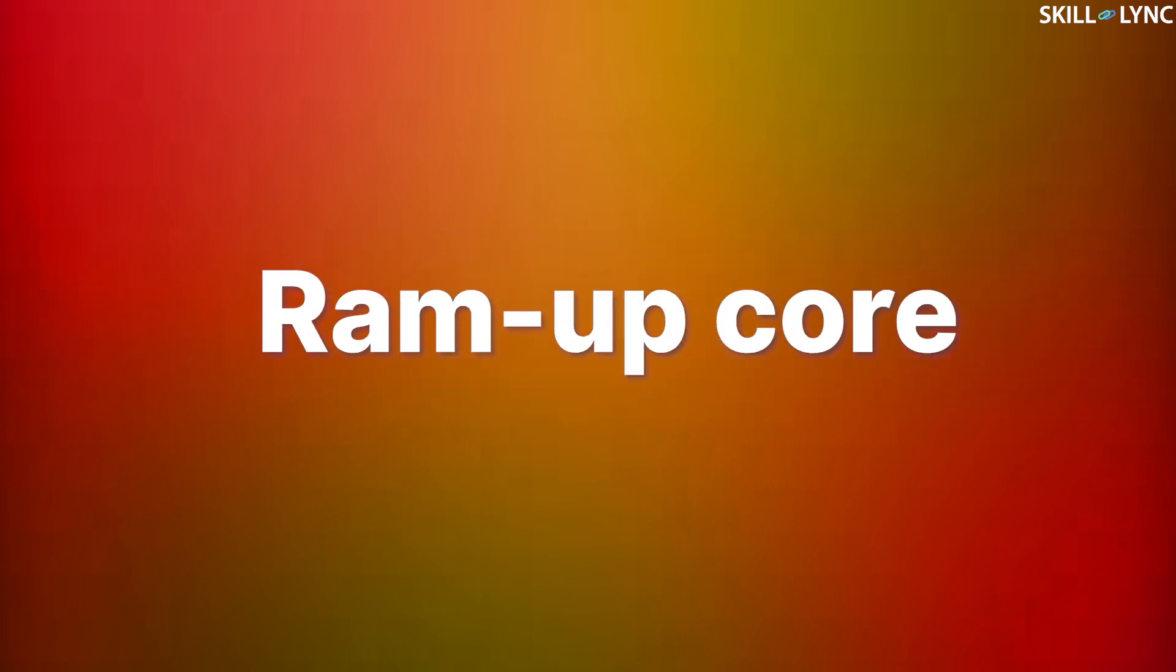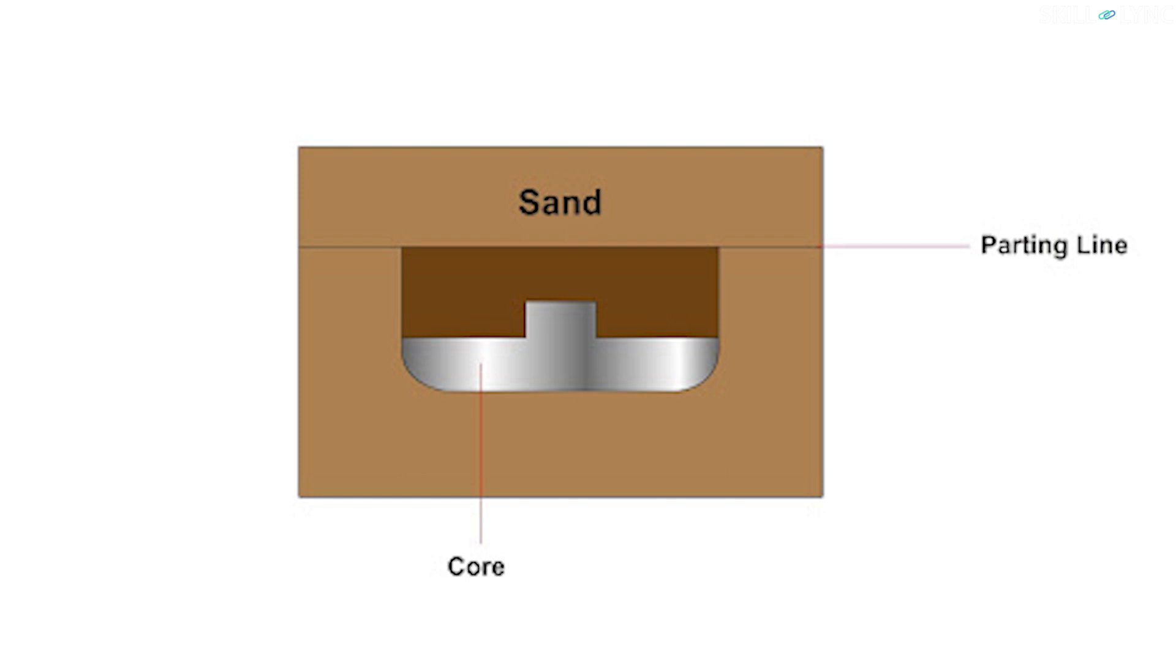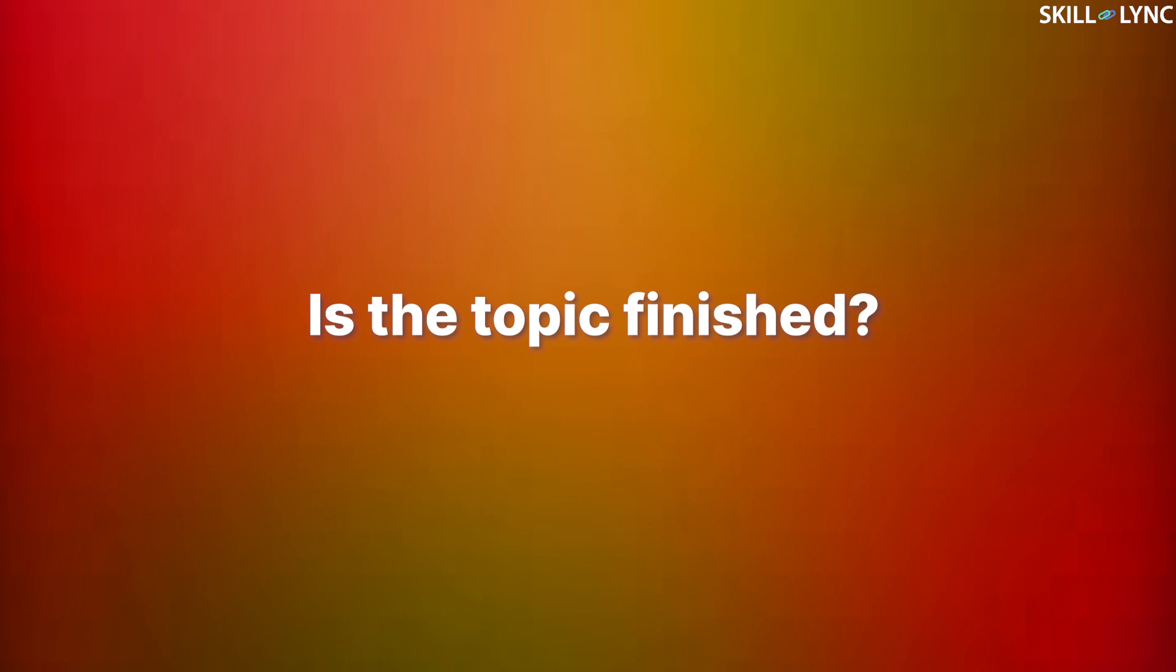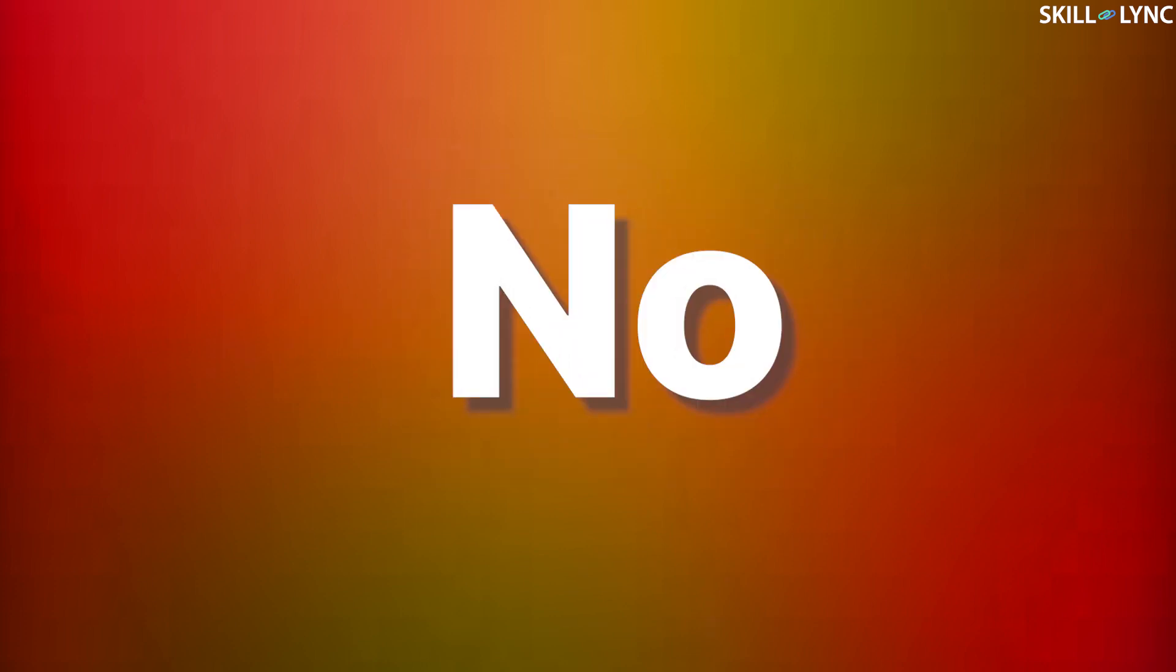Another important type of core is the ram up core. This core is placed in the sand along with the pattern before the mold is rammed. Ram up core is used for making external or internal details to the casting.